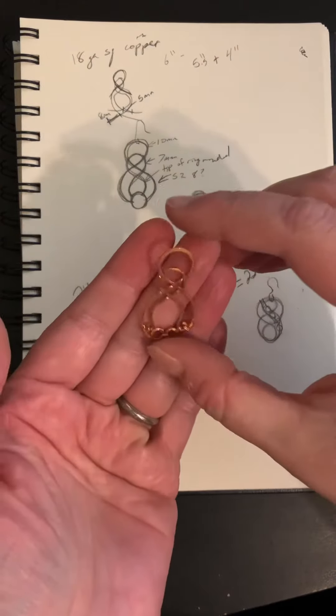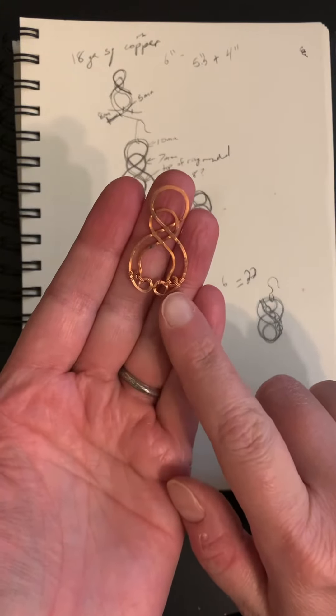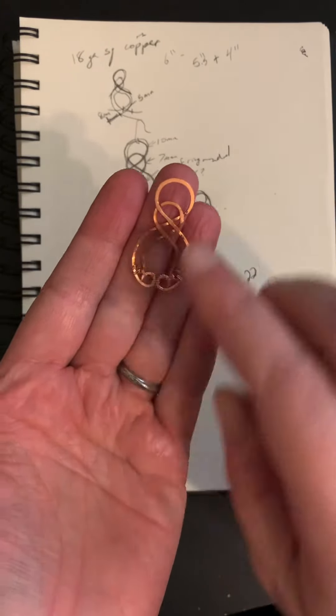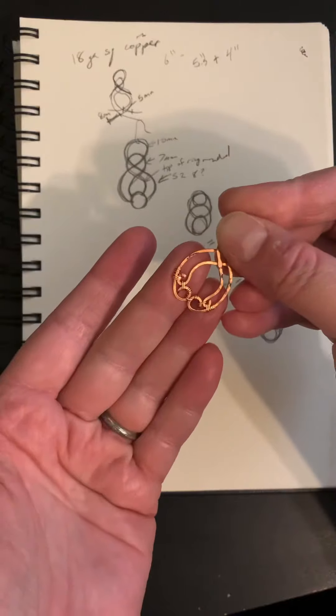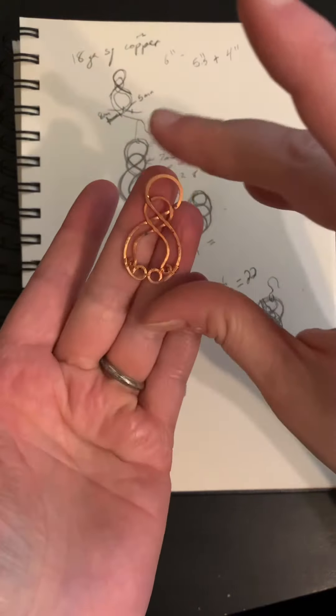So next I tried a version like this and you can see that I'm trying something new with the bottom here. This is round 26 gauge wrapping wire and I thought okay I like that a little bit better but how can I make these lines cleaner.